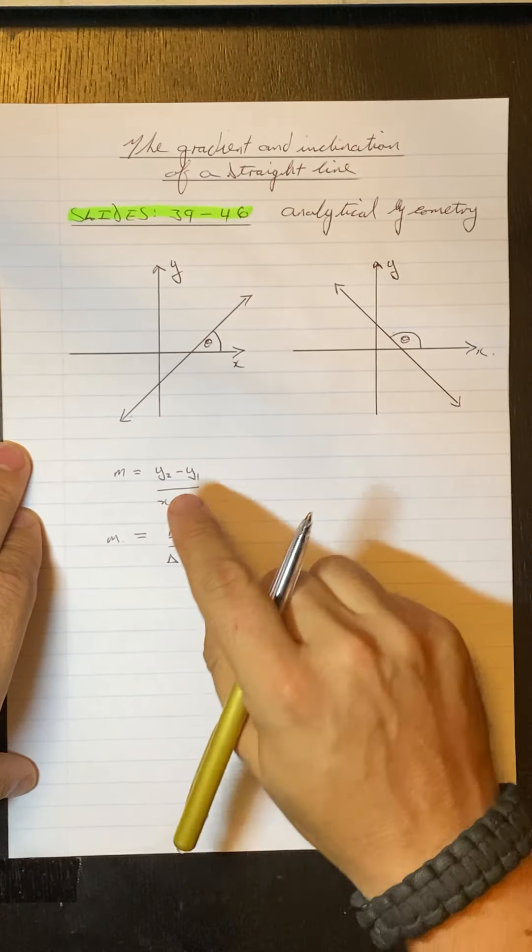Therefore, the gradient of AB is equal to minus 1. The second part of the question is determine the inclination of the line joining these two points.